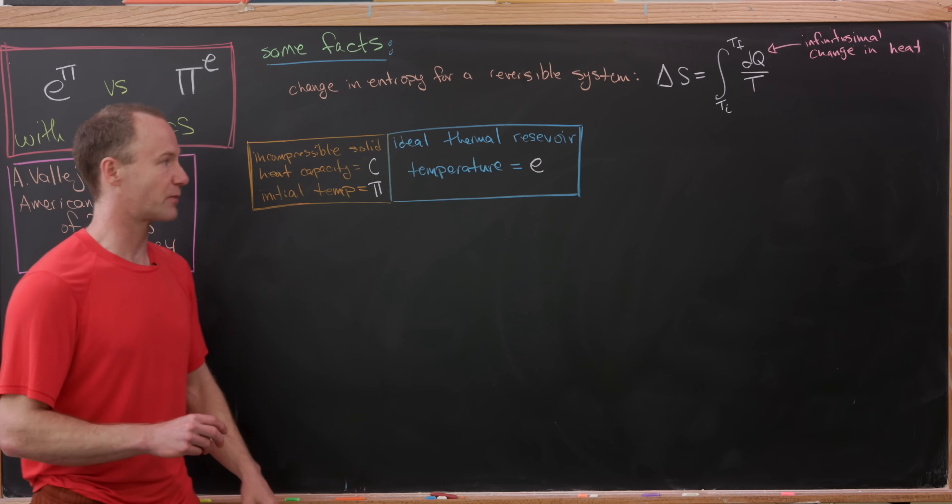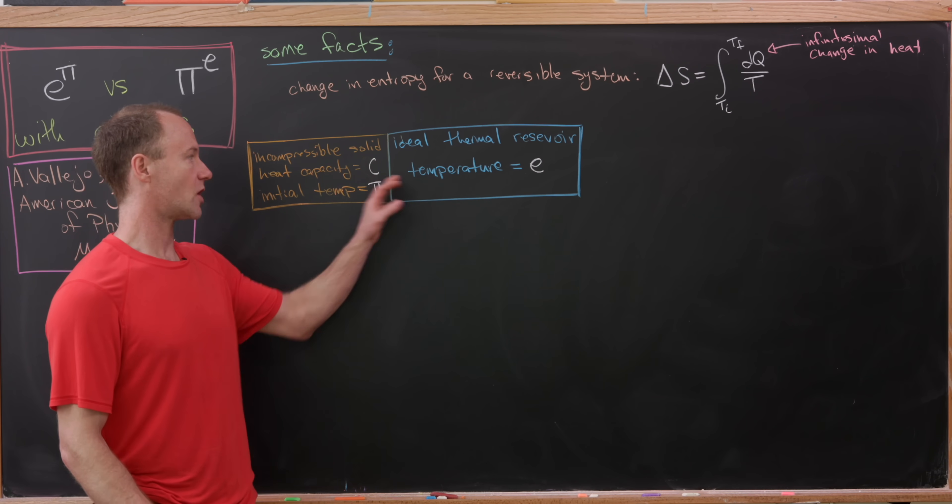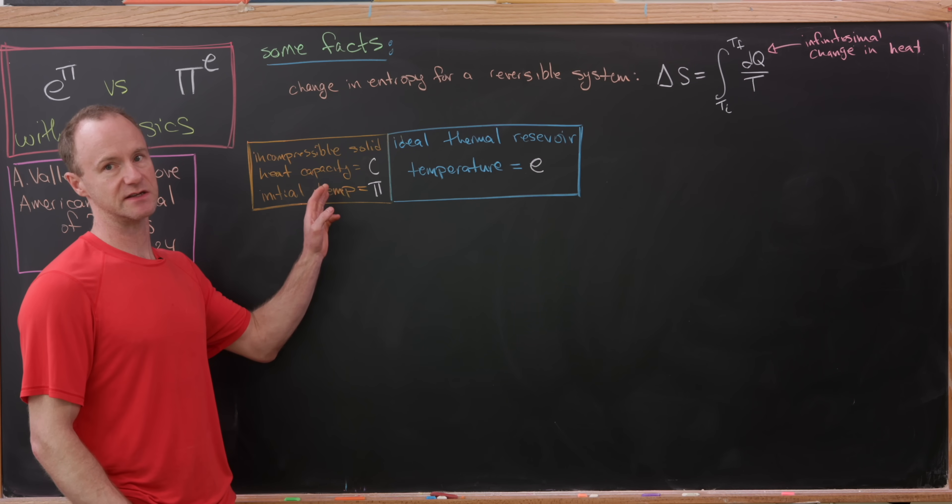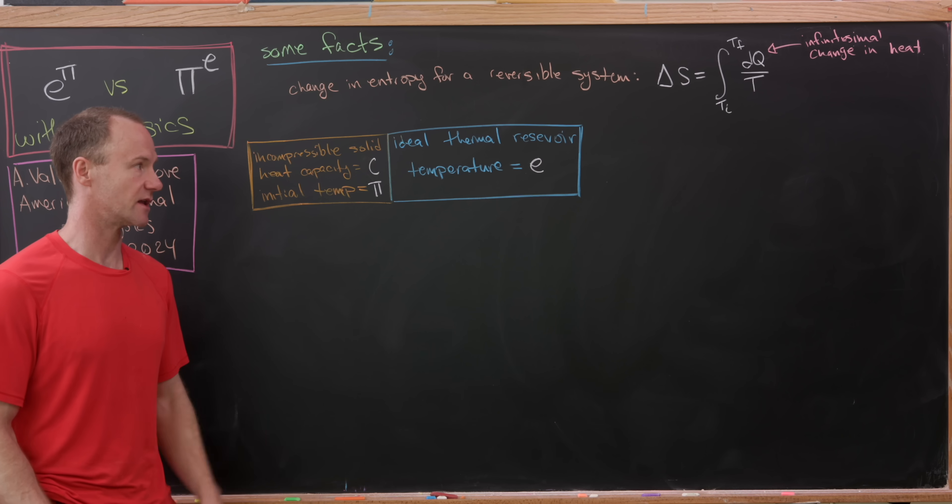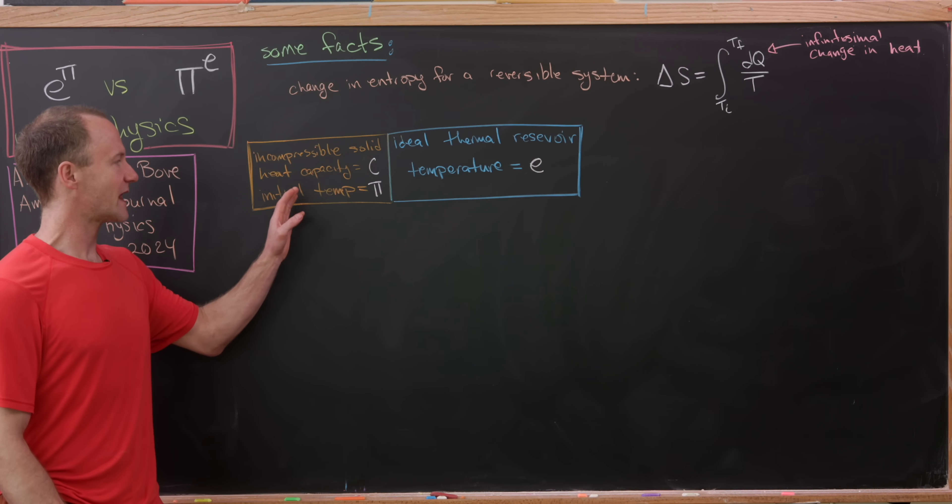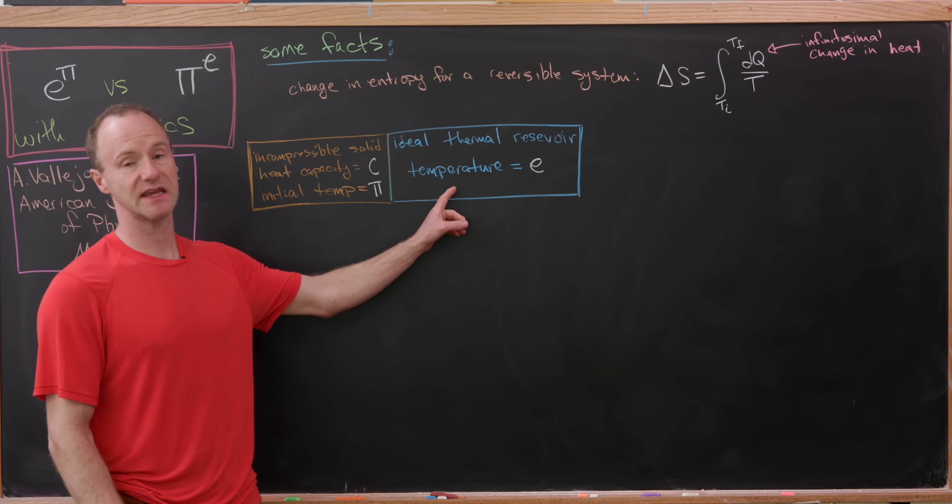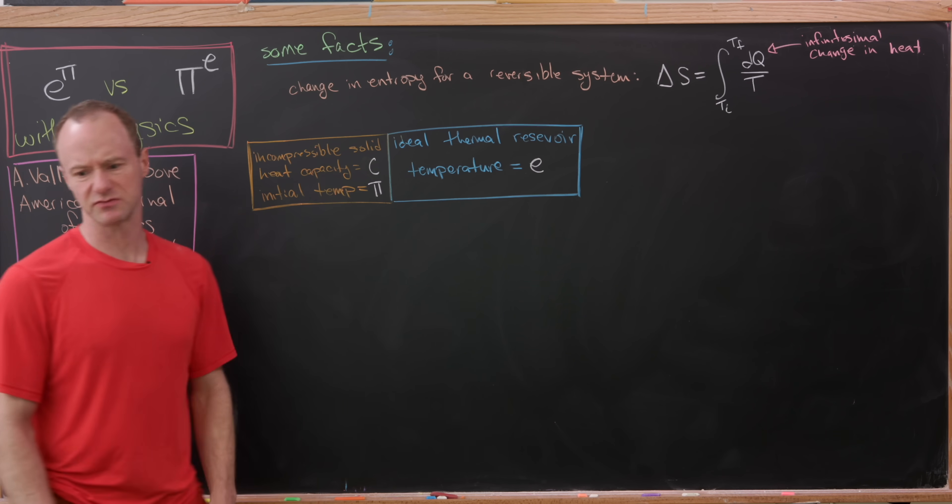But since this is a perfect heat sink, if you will, it'll collect all of the heat that is put off by this solid, and the temperature over here will not change. So what happens is that the temperature over here of this solid will decrease from pi to E, whereas this doesn't change at all.